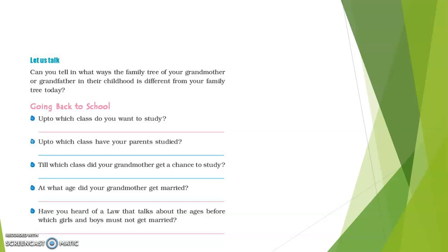Recently, there was an article on TV about a 15-year-old girl who was about to be married. Girls are not supposed to be married before 18 years of age — that is the law. There are help groups set up by the government that save children who are married before 18 years of age, as it is illegal. This girl's parents were trying to marry her off at 15, so some people reported it. She was rescued because child marriages are illegal.